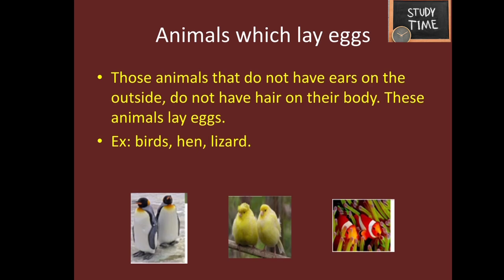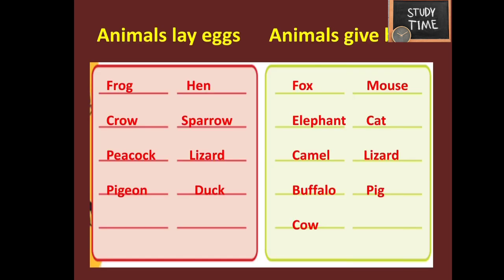Animals which lay eggs: those animals that do not have visible ears also do not have hair on their body — these animals lay eggs. The animals which lay eggs are: frog, crow, peacock, pigeon, hen, sparrow, lizard, and duck.